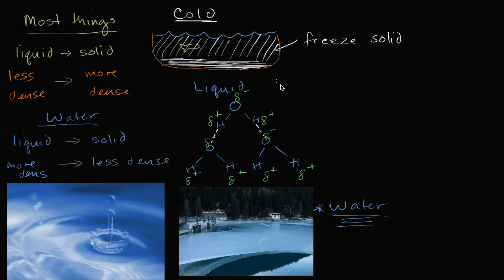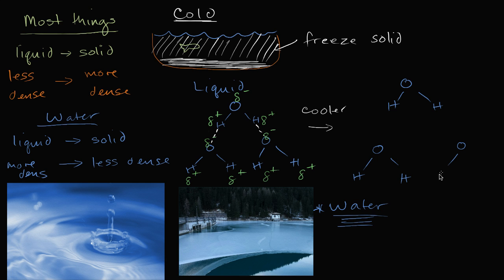But as we get cooler and lose heat, the molecules don't have that kinetic energy to get close and bump up against each other and flow past each other. Instead, they form a lattice structure — you have oxygen and hydrogen atoms arranged in a pattern where the molecules are actually further apart from each other. They no longer have the kinetic energy to keep breaking and reforming the hydrogen bonds or to push up against each other, so you form this lattice structure.